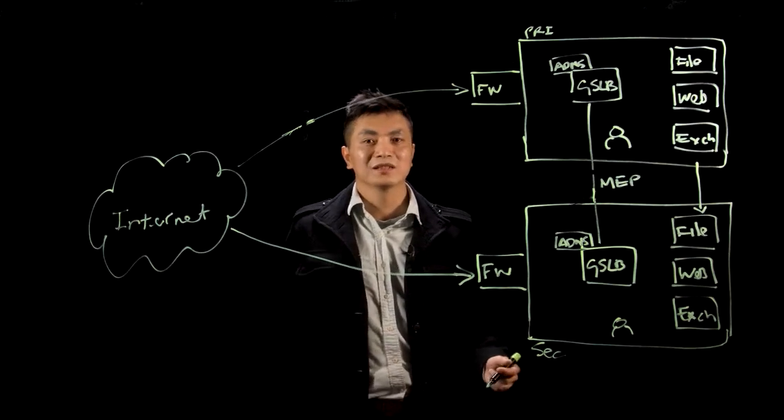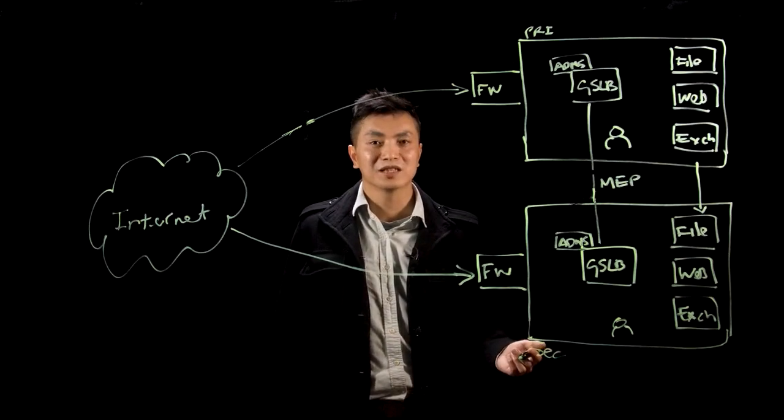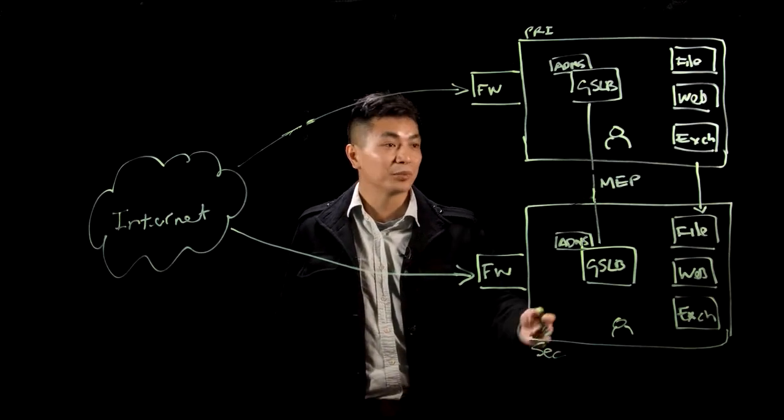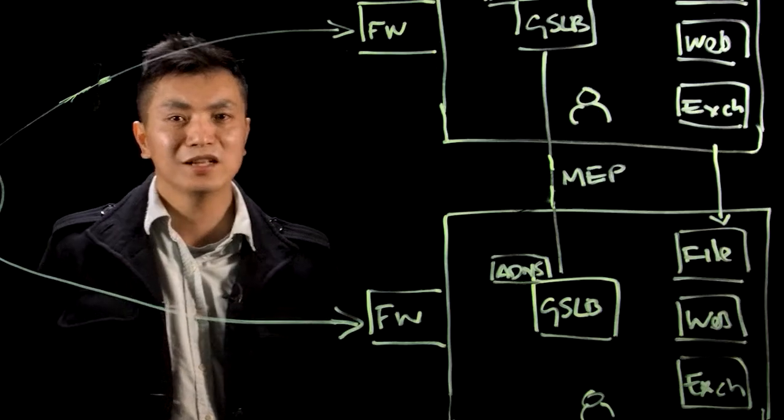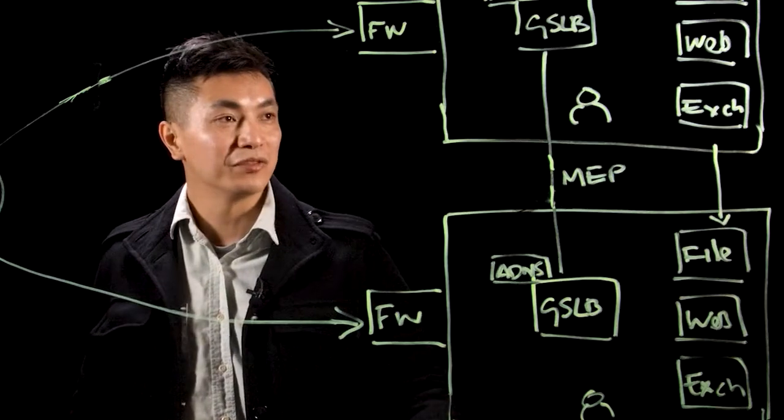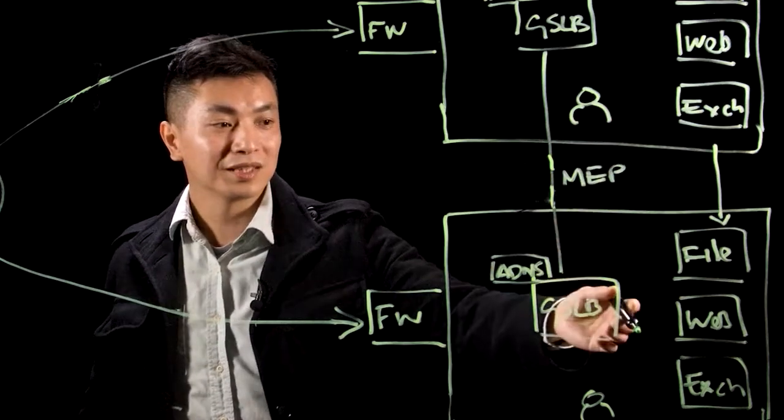GSLB goes beyond standard HA. If we wanted to set up a rule, for example, to load balance our web servers, we could set up a rule to enable this. In this scenario, users can access the web servers from a primary site or the secondary site.